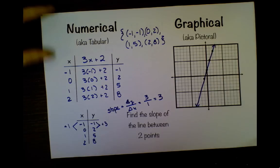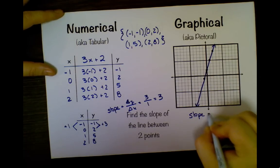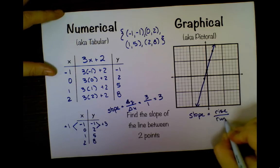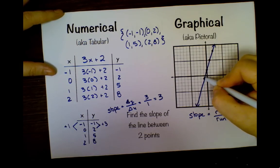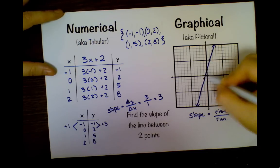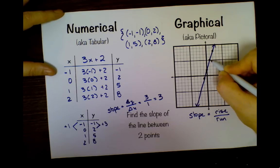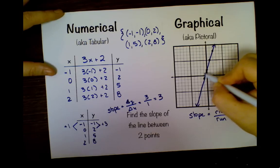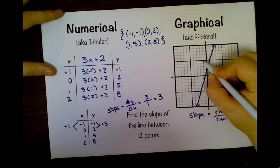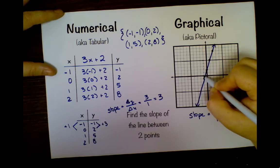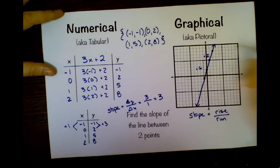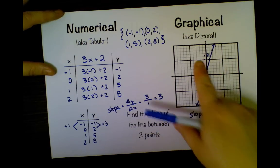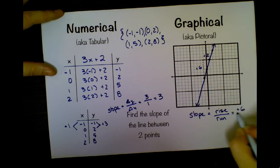If I wanted to find the slope, slope is rise over run. So I would count. I could pick any two points. Maybe I'll do points that aren't right next to each other. I'm going to pick these two points. I would go from here to here. To get from (-1, -1) to (1, 5), I have to go up 1, 2, 3, 4, 5, 6. And I have to go over 1, 2. So up 6, over 2. My rise was up 6, my run was over 2, and that reduces to 3.